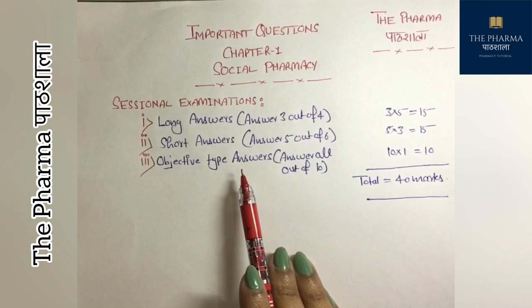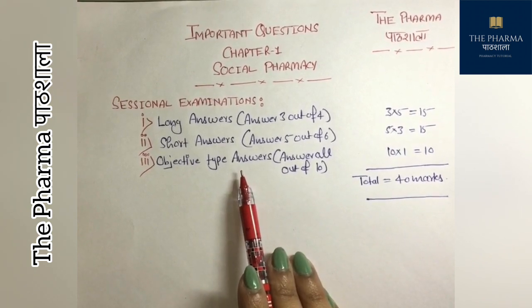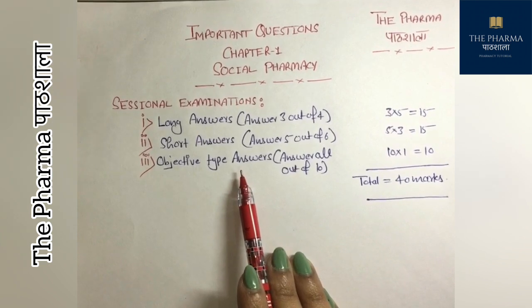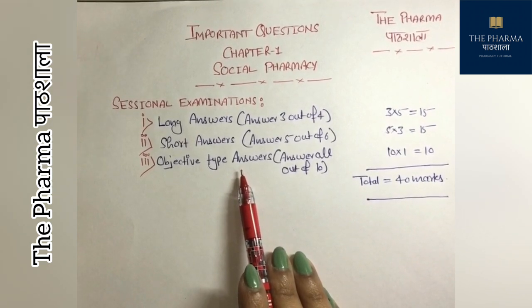Each attempt is available to answer the question. You will answer in one sentence, or one line. Another question type is fill in the blanks, and then multiple choice questions with 4 options.